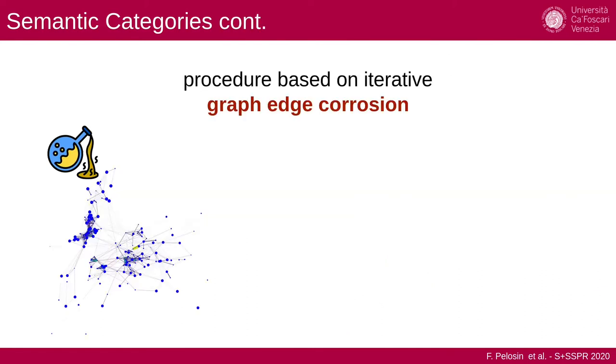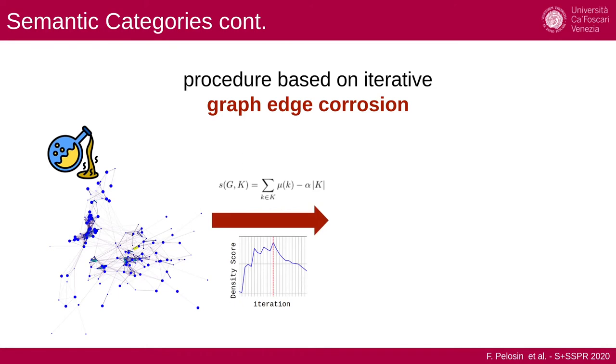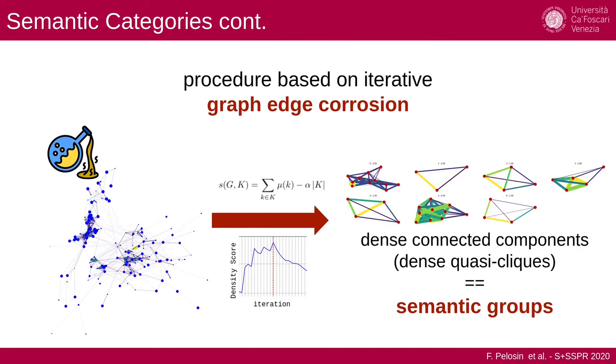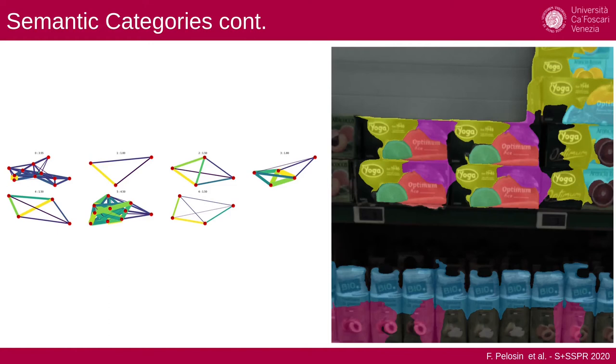What we want to do is extract these dense subgraphs. We do so with an iterative procedure based on graph edge corrosion. So we start corroding the graph, and by optimizing this density score, we disconnect the graph and eventually get all these dense connected components. These connected components correspond to semantic groups. This is the visualization of the original image, and you can see these are the subgraphs and the correspondent visual pattern detection.